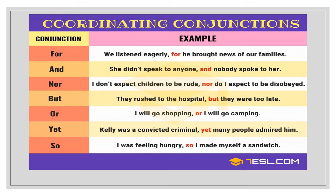Most of you know how to use 'and' — when you have two things and you want to put them in one sentence. For example: 'She didn't speak to anyone, and nobody spoke to her.' These two things happen at the same time, simultaneously. Next we have 'nor' — you may not be very familiar with this word. 'Nor' means both of these things cannot happen.